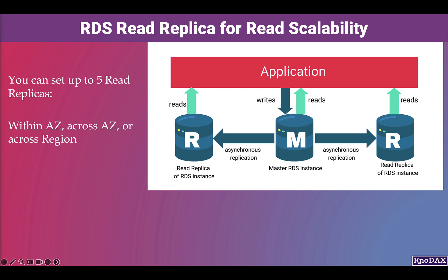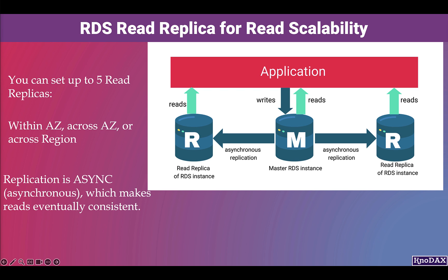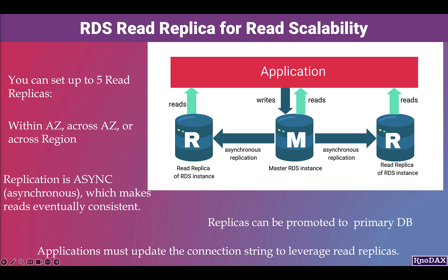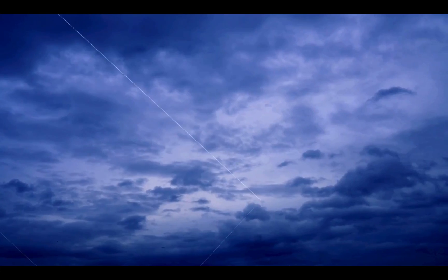Read replicas are replicated from the primary database. Replication is asynchronous, which makes reads eventually consistent — meaning changes will be available in read replicas later, not immediately when data is changed in the primary database. Read replicas can be promoted to the primary database if needed. Applications must update their connection string to leverage read replicas, meaning they need to tell the database driver which replica database they are querying.